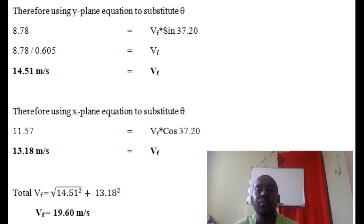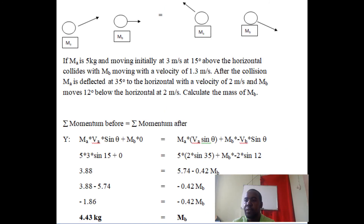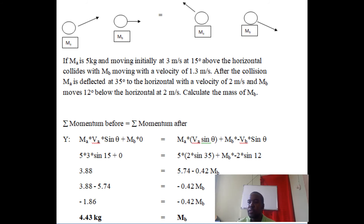Question three: mass A is 5 kg moving at 5 m/s at 15 degrees above the horizontal. It collides with mass B moving at 1.3 m/s. After the collision, mA is deflected 35 degrees to the horizontal at 2 m/s, and mB moves 12 degrees below the horizontal at 2 m/s. We need to find the mass of mB. This is an elastic collision. Since we're finding the mass and everything else is given, we only need one plane — the y plane.